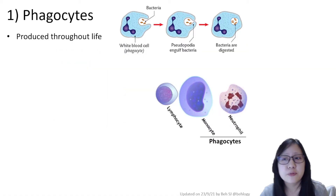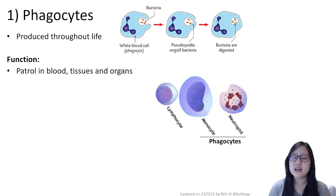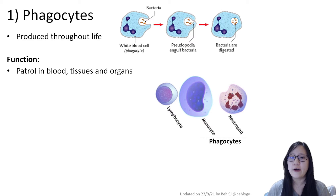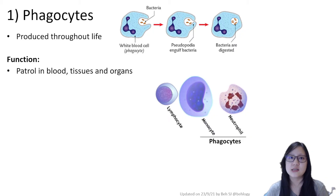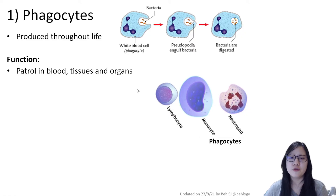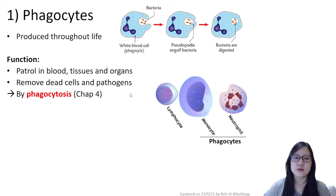Phagocytes are produced throughout your life and their function is to patrol the blood, tissues, and organs. This makes sense from the previous video — some white blood cells can exit blood vessels and enter tissue. Phagocytes do this, patrolling and looking for invaders, removing dead cells and pathogens by phagocytosis.